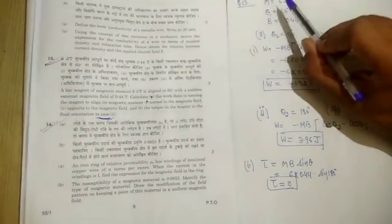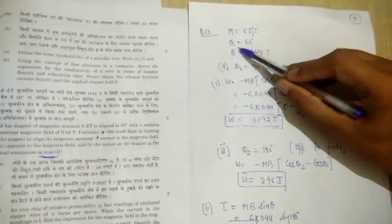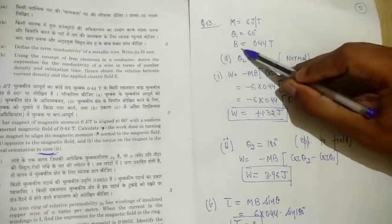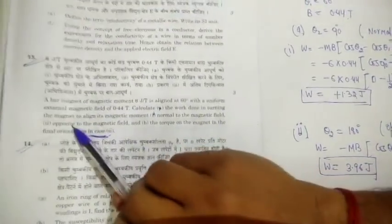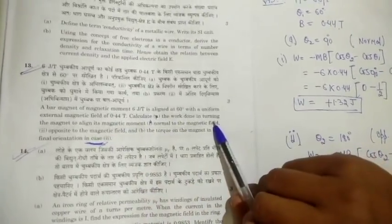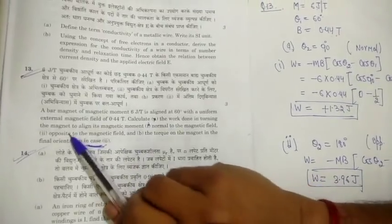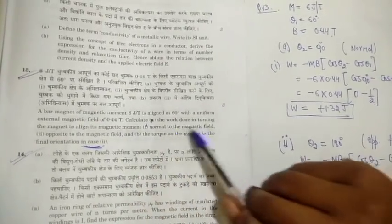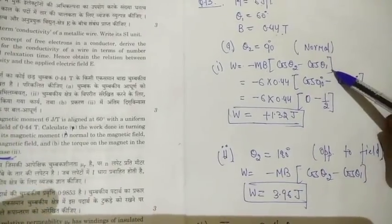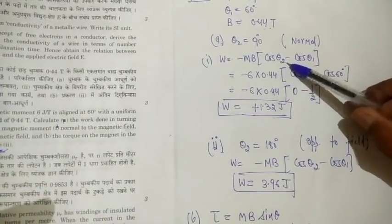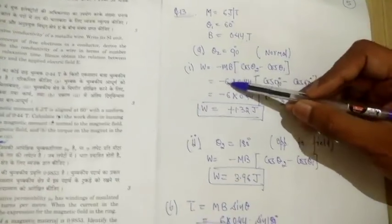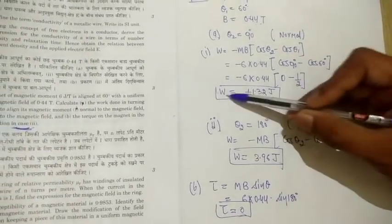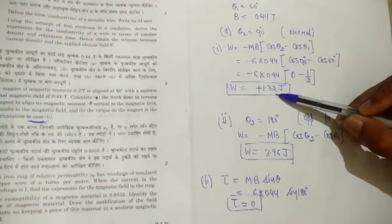Question 13: a bar magnet with magnetic moment 6 J/T is initially at 60° to a uniform magnetic field of 0.44 T. Find the work done to align the moment (a) normal to the field and (b) opposite to the field. Work done = −MB(cosθ₂ − cosθ₁). For θ₂ = 90° and θ₁ = 60°, the work done equals 1.32 joules.